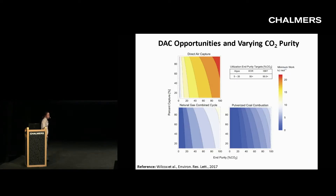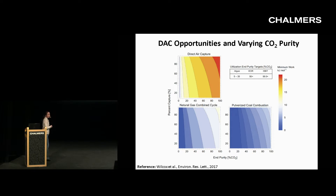In a paper published in Environmental Research Letters, we show simple energy calculations for direct air capture and compare the minimum work for separation of CO2 from natural gas and pulverized coal combustion. The span ranges from single digits up to 20 kilojoules per mole — very similar to the earlier plot. For algae production at 5% purity, the energy to take CO2 from 400 ppm to 5% is equivalent to the energy required to separate CO2 from natural gas-fired power plant exhaust up to 95%. We know we can do that for under $100 a ton today. So Klaus Lackner is absolutely spot on.